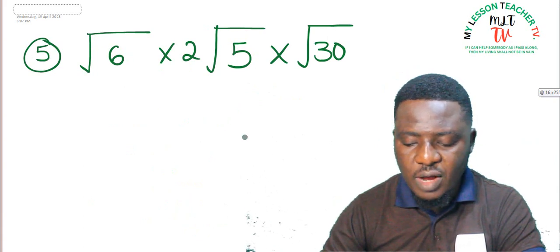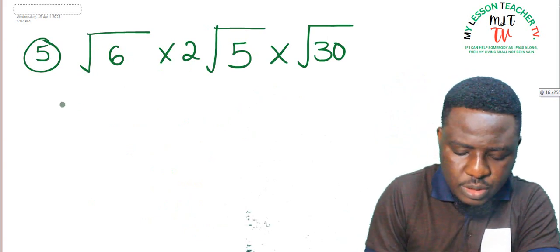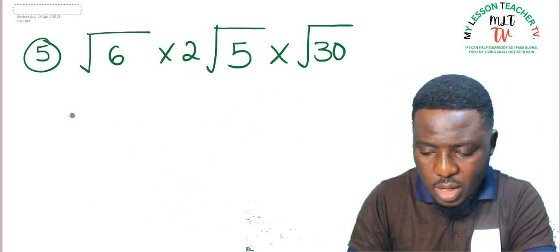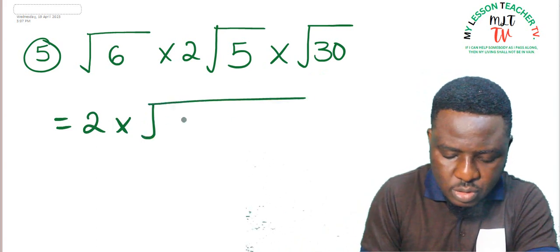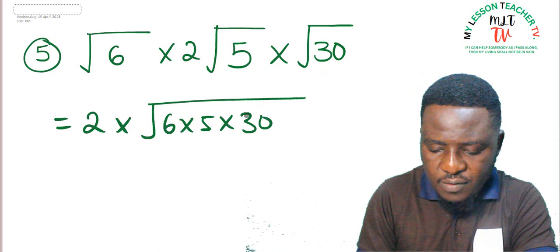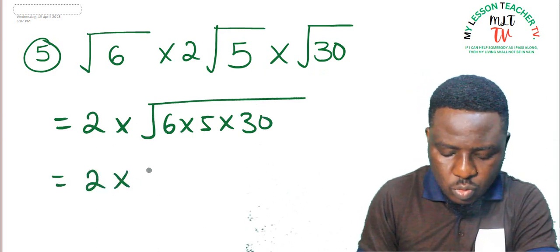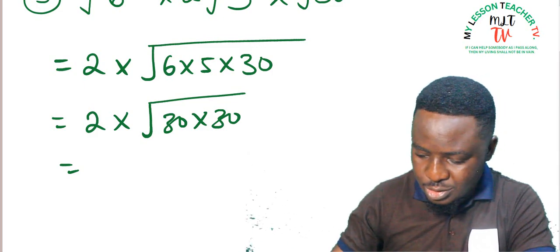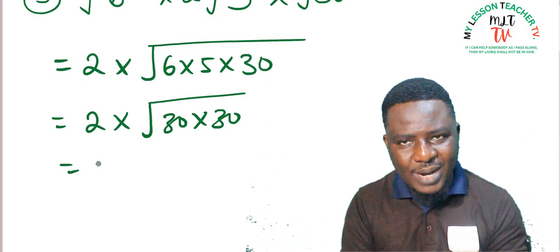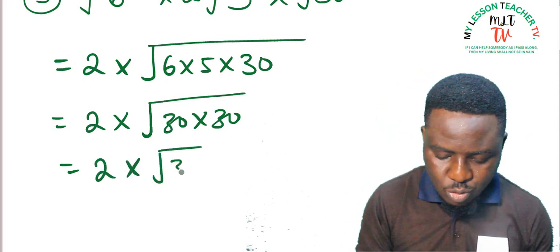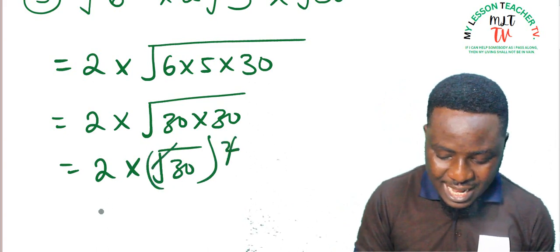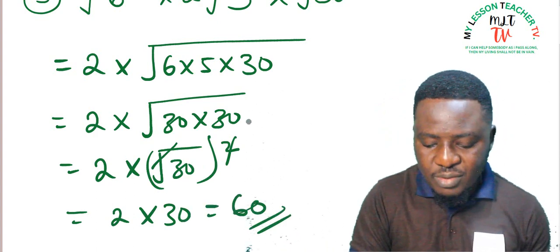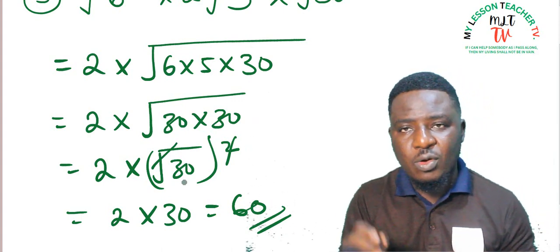Question 5: root 6 times 2 root 5 times root 30. The coefficients are 1, 2, and 1. Multiply rational parts: 1 times 2 times 1 = 2. Multiply irrational parts: root 6 times root 5 times root 30 = root 900. Since root 30 times root 30 = 30, and 2 times 30 = 60. Or: root 900 = 30, so 2 times 30 = 60. The answer is 60.